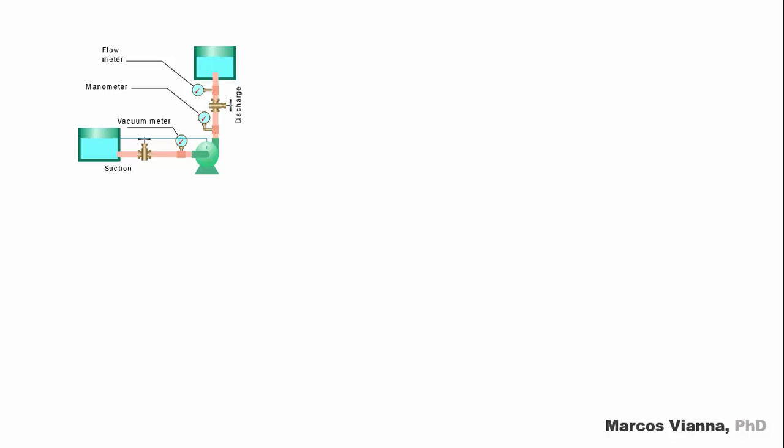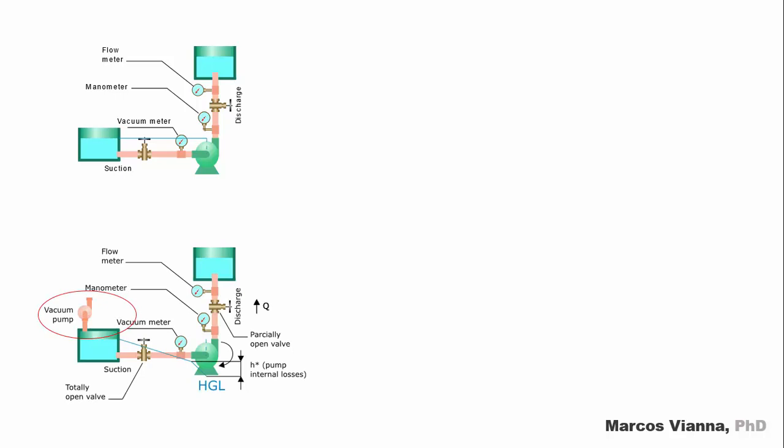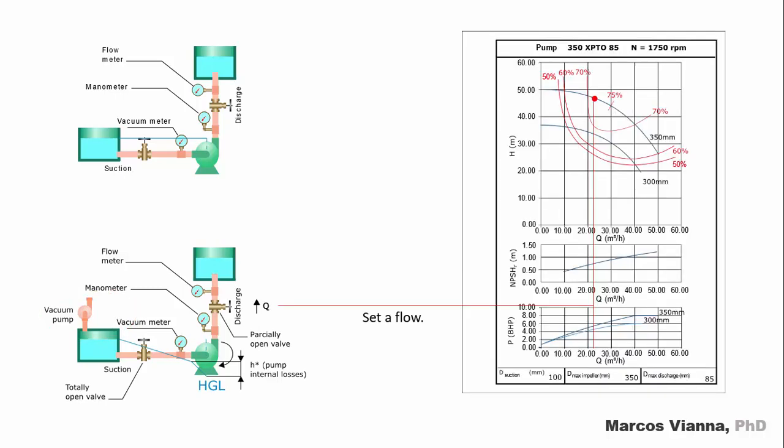Let's see how the manufacturers find the minimum positive suction head that the pump requires to avoid cavitation. This is our traditional installation for running pumping tests. We'll make a modification. Let's put a cover on the suction sump and install a vacuum pump on it. Let's begin our tests.